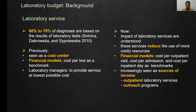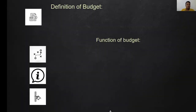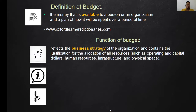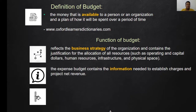Let's look at the definition of budget. A budget is the money that is available to a person or an organization, and a plan on how it will be spent over a period of time. Among the functions of a budget: first, business strategy — the budget reflects the business strategy of the organization and contains the justification for the allocation of all resources such as operating capital, human resources, infrastructure, and physical space.